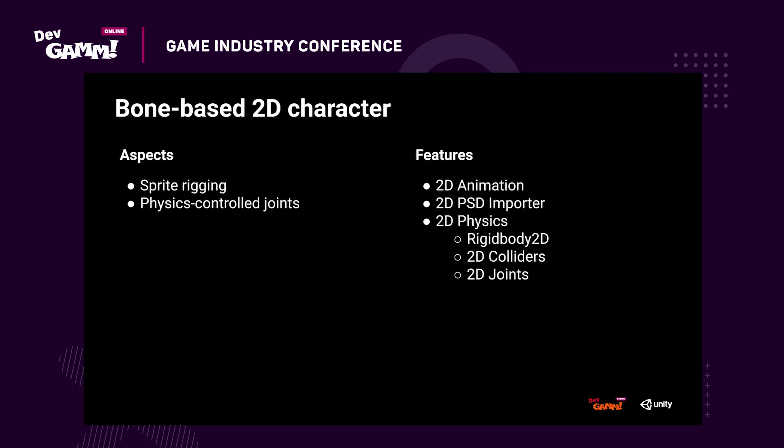Bone-based 2D characters are a powerful alternative to sprite sequences. A single sprite or a small set of sprites can be assembled to make a character. Animation data is then decoupled from graphics to save on build size and to improve production flexibility. Some things we care about here are the sprite rigging workflow and physics-controlled joints. To achieve this we are working with 2D animation, the 2D PSD importer, 2D physics, and rigidbody 2D along with the 2D colliders and 2D joints.